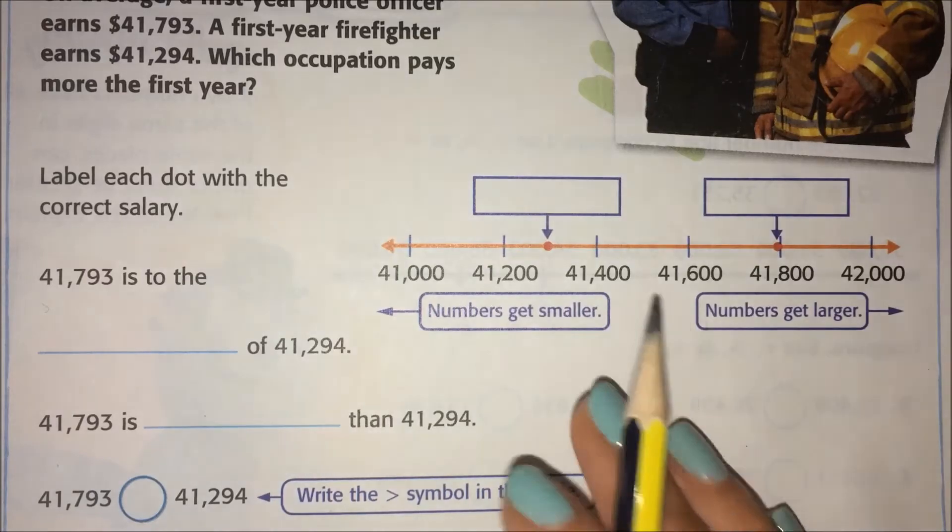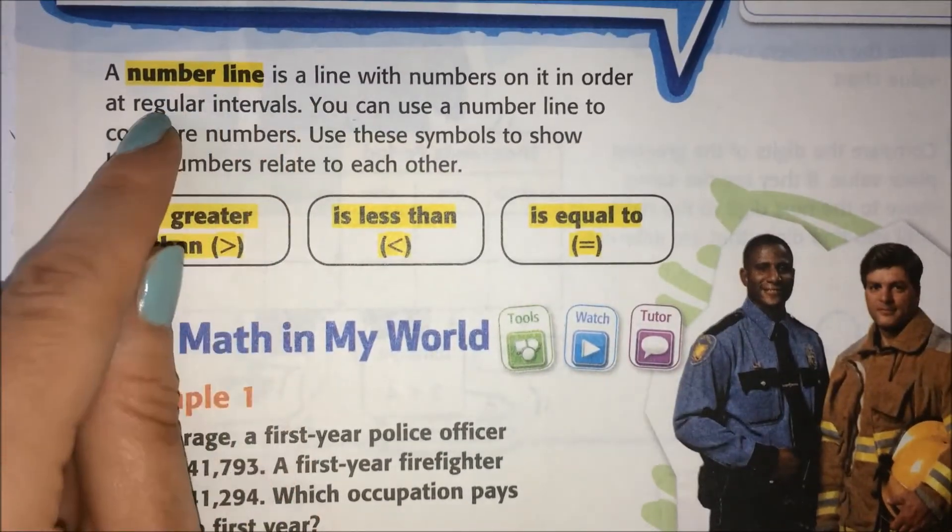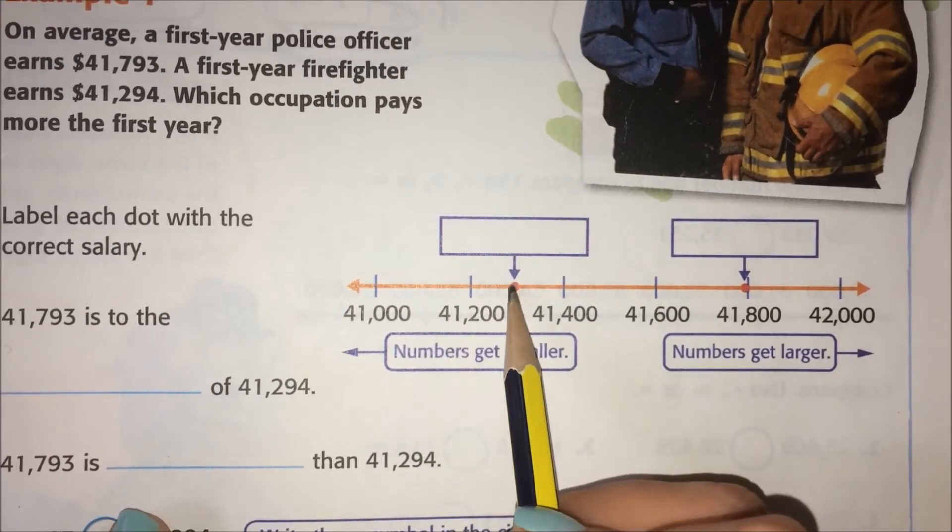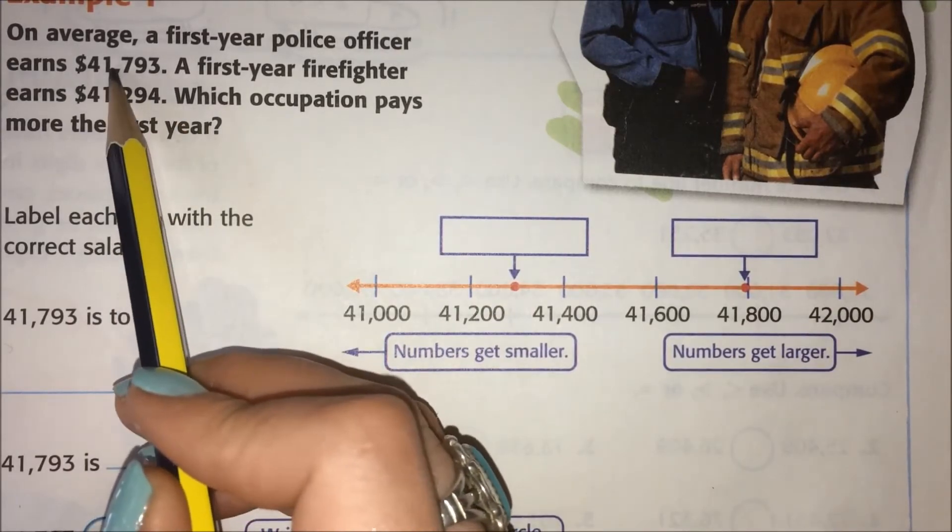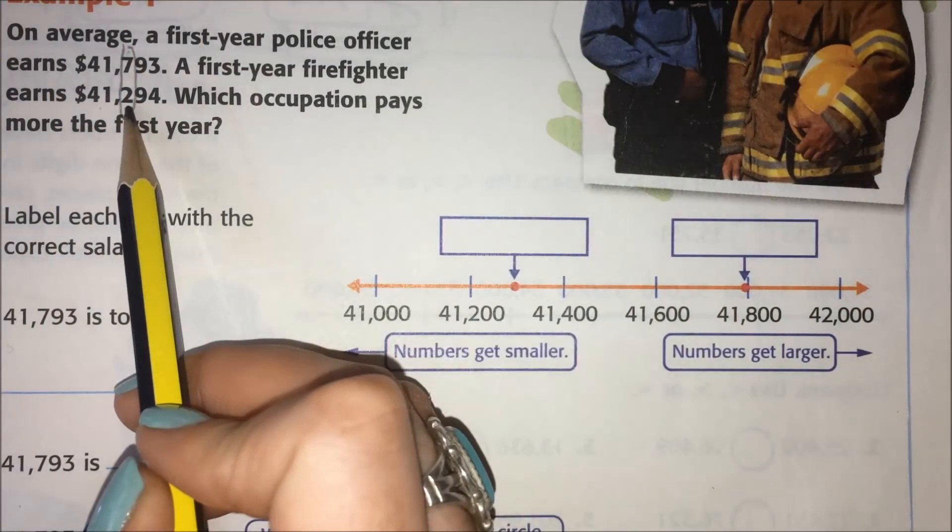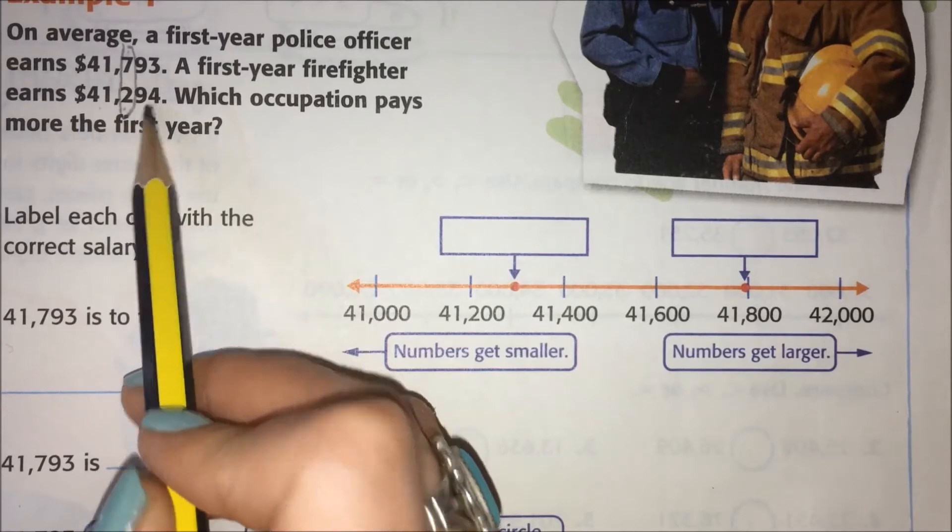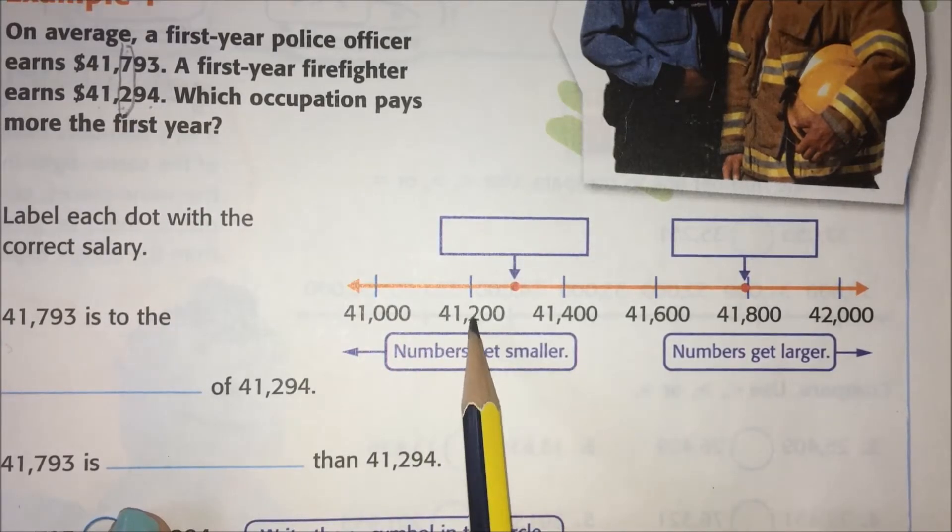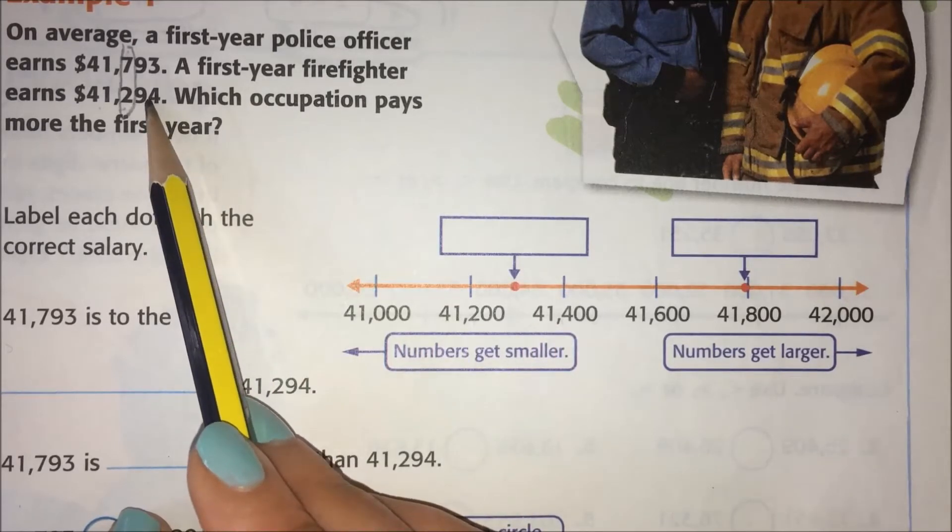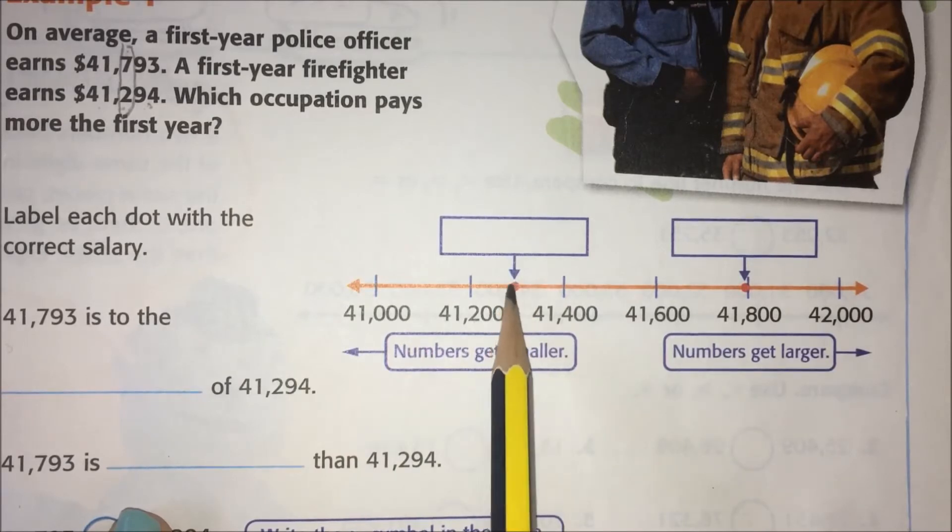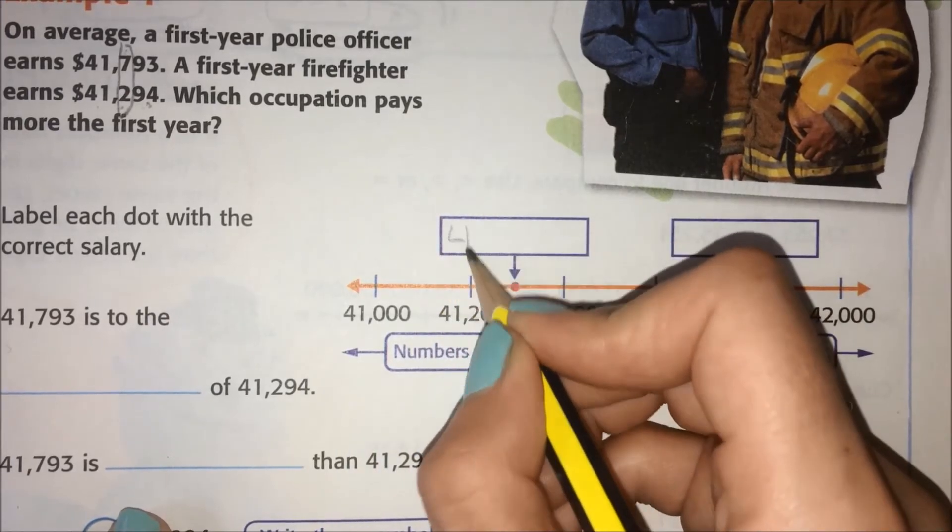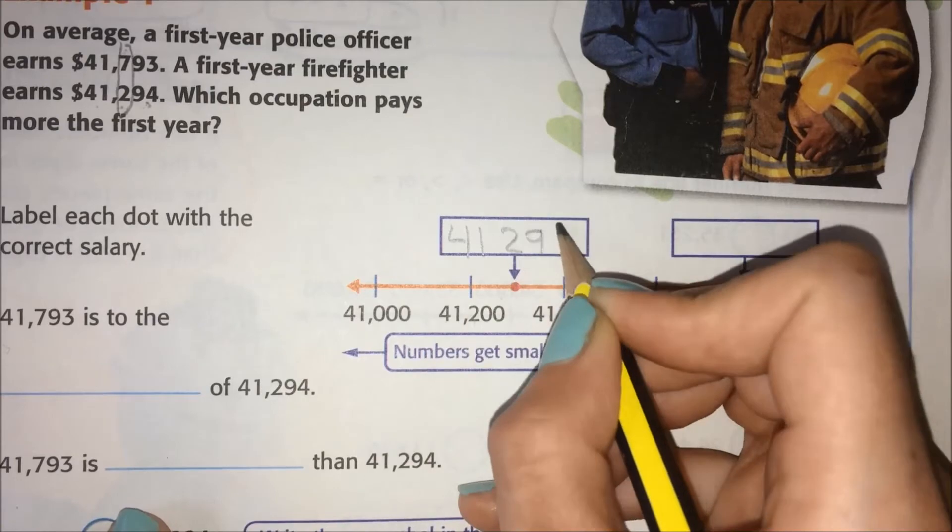So here's what we were talking about up here with the number line in regular intervals. Which one do we think goes here? Well, they both are 41. So now we're going to be looking here at the 2 and the 7. Okay, well this one has a 2 and a 9. And I see here's 41,200, 41,400. So it seems like this number, the firefighter's number, is going to be right about here, right in the middle. Because it's almost 41,300. So let's write that in. Don't forget our comma.